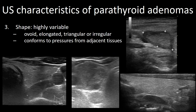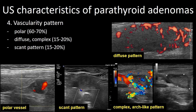Adenomas have highly variable shapes — they can be ovoid, elongated, triangular, irregular, or round, because the adenoma tends to conform to pressures from adjacent tissues. Vascularity is an important aspect. Usually there is one vessel that brings blood to the adenoma, called a polar vessel. But there are other patterns, like a diffuse pattern, a complex arch or scan pattern, or an adenoma with very little vascularization.